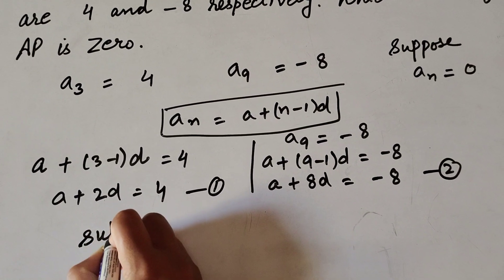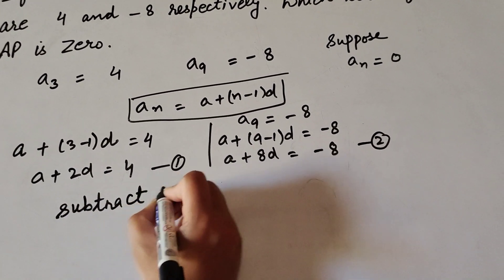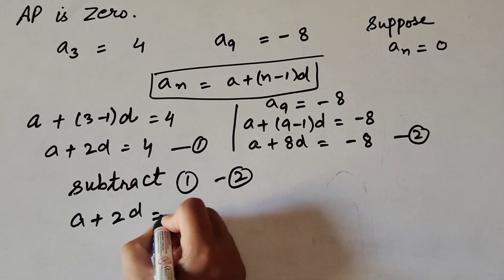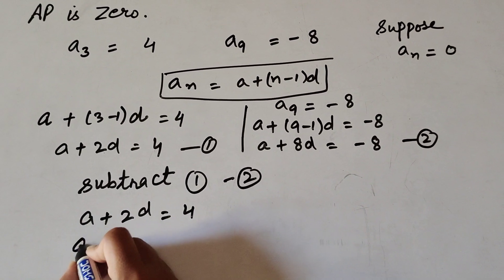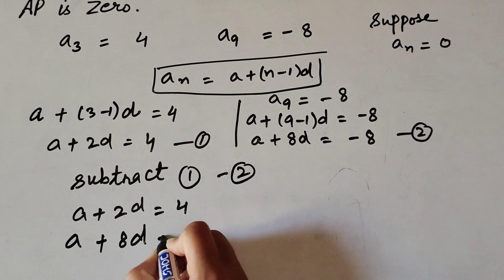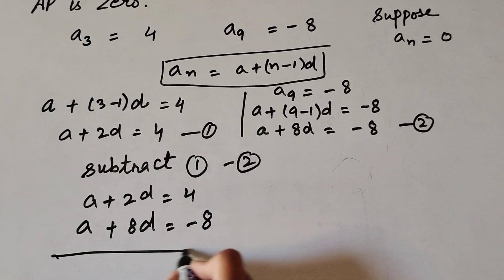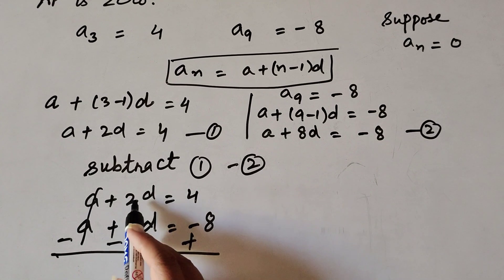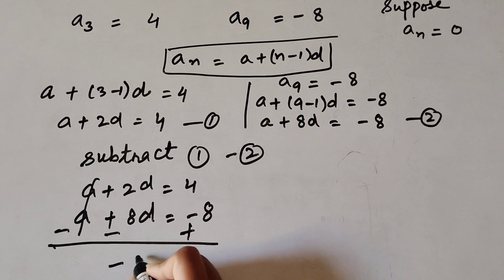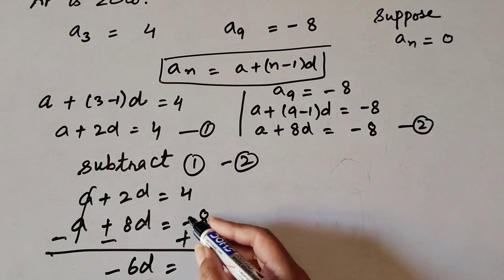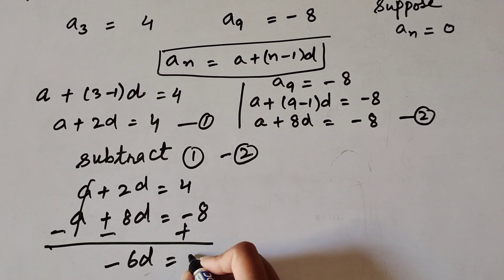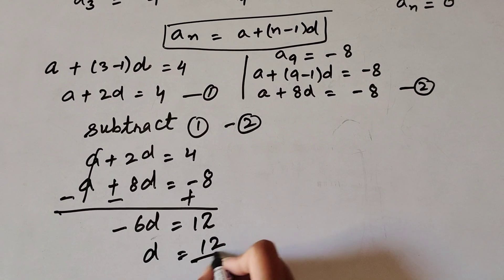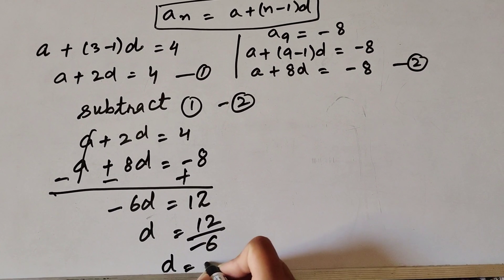Now we subtract equation 1 from equation 2. We have a plus 2d equals 4, and a plus 8d equals minus 8. Subtracting, the a terms cancel. The signs change: 2d minus 8d gives minus 6d, and 4 plus 8 equals 12. So minus 6d equals 12, and transposing minus 6 to the right hand side, d equals minus 2.